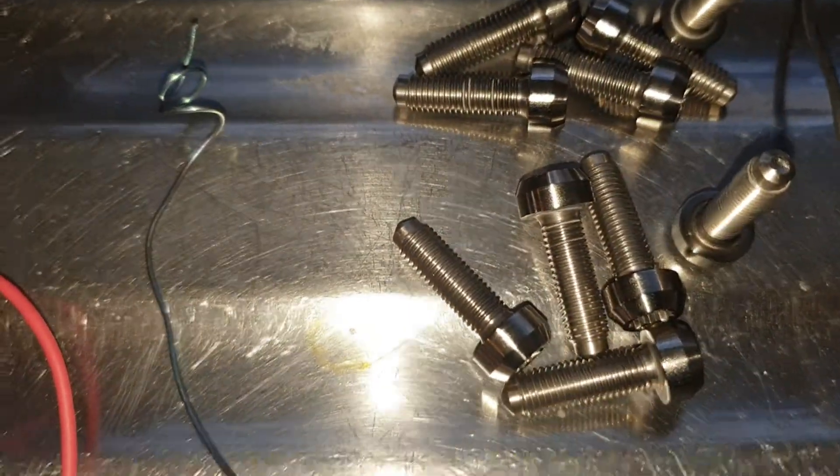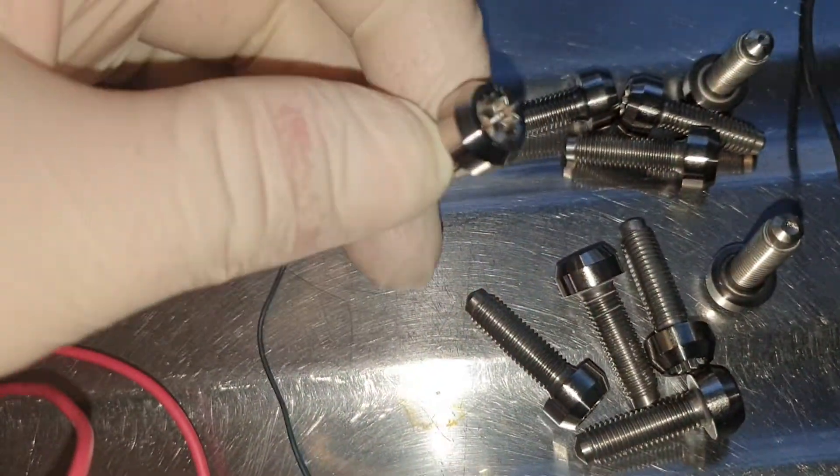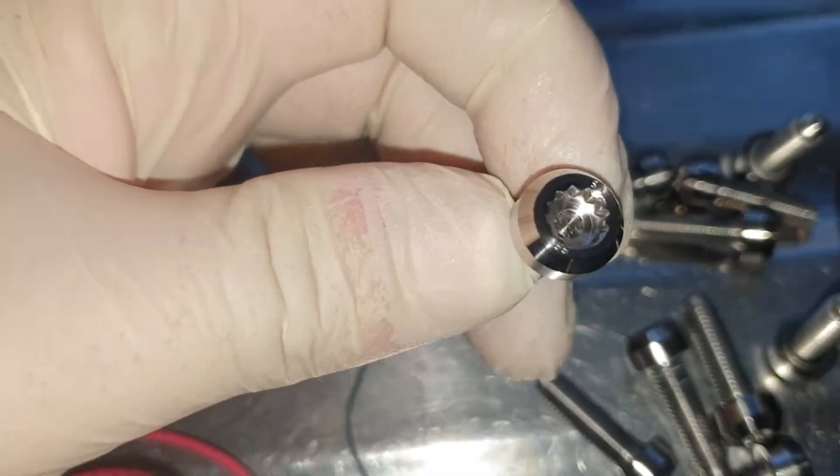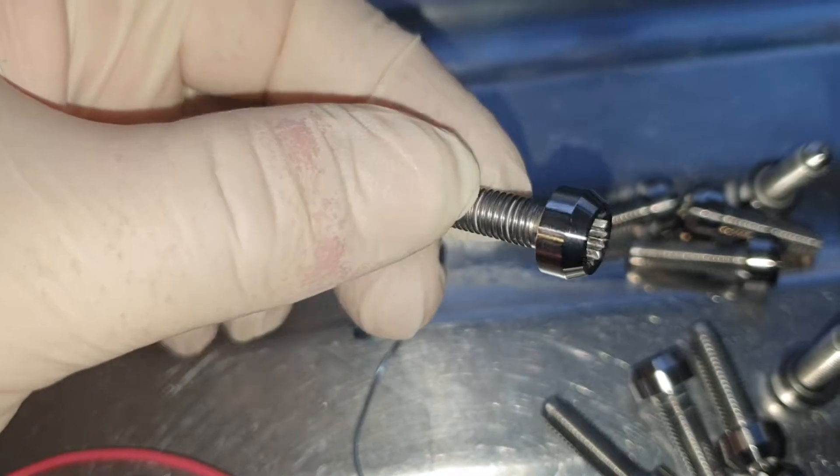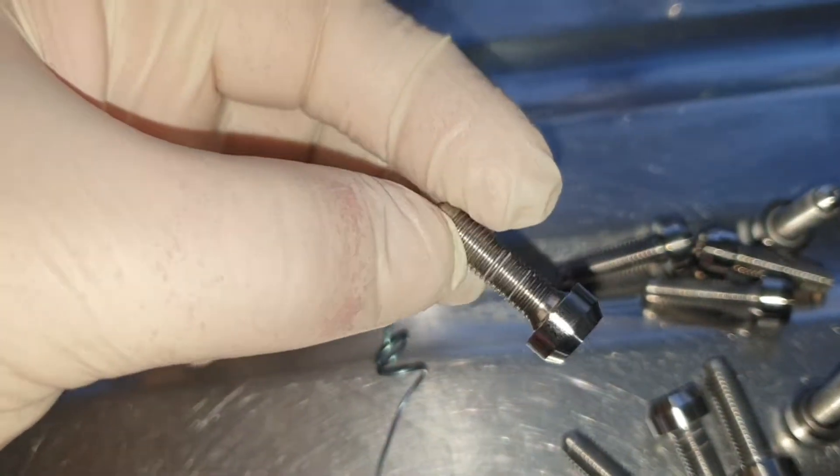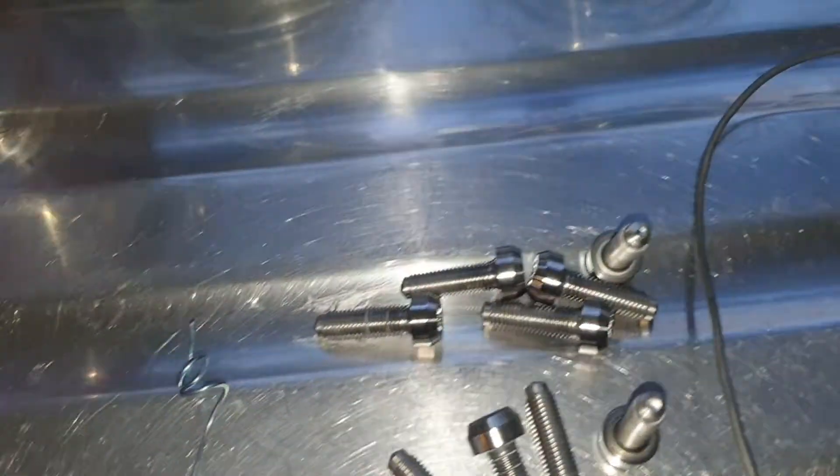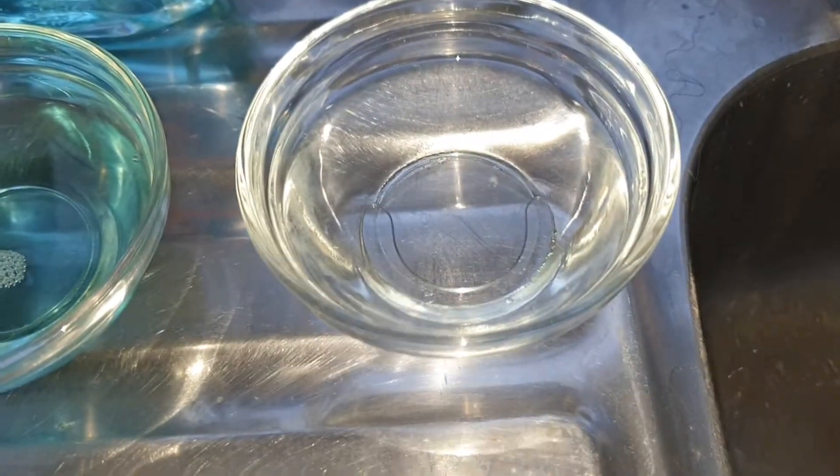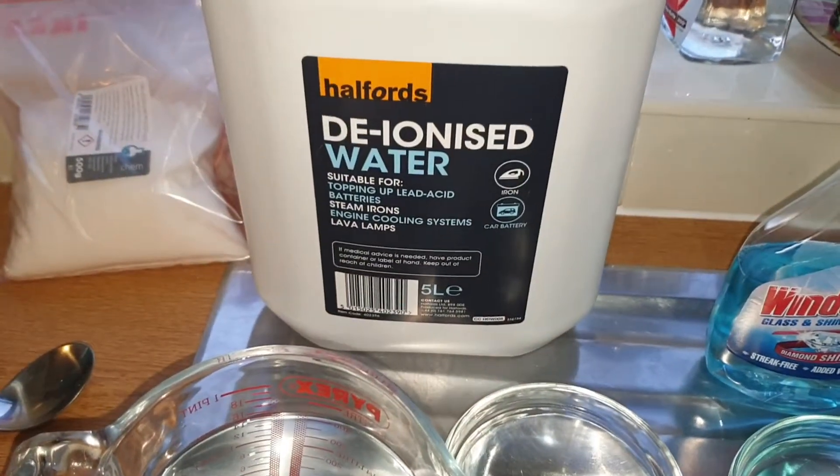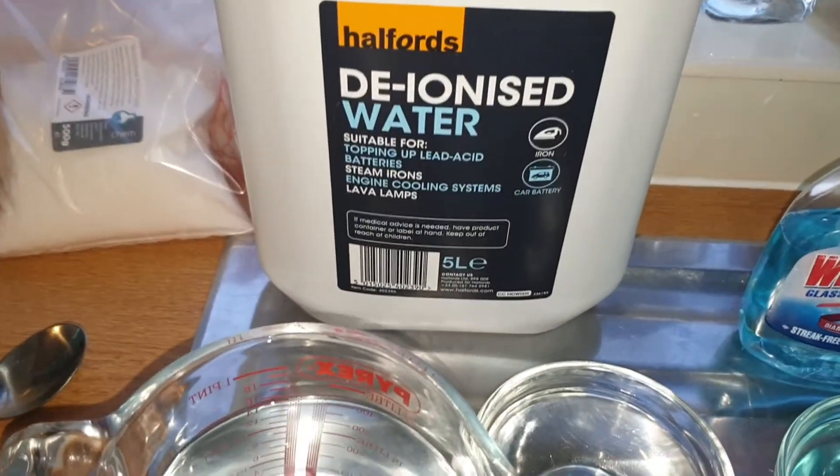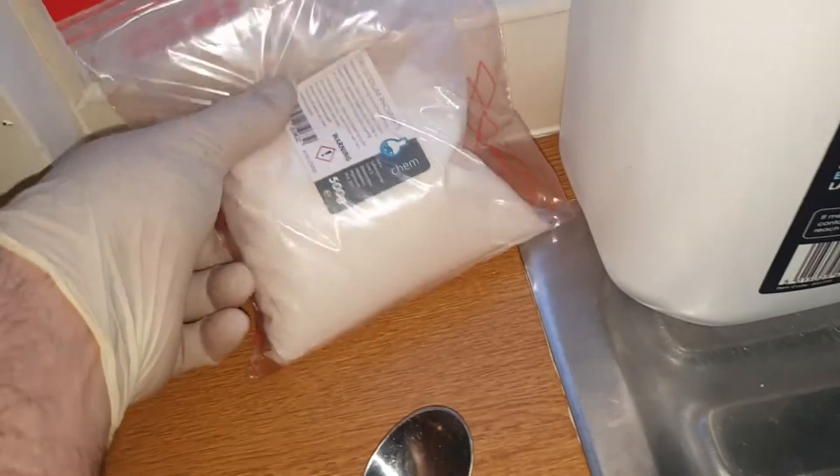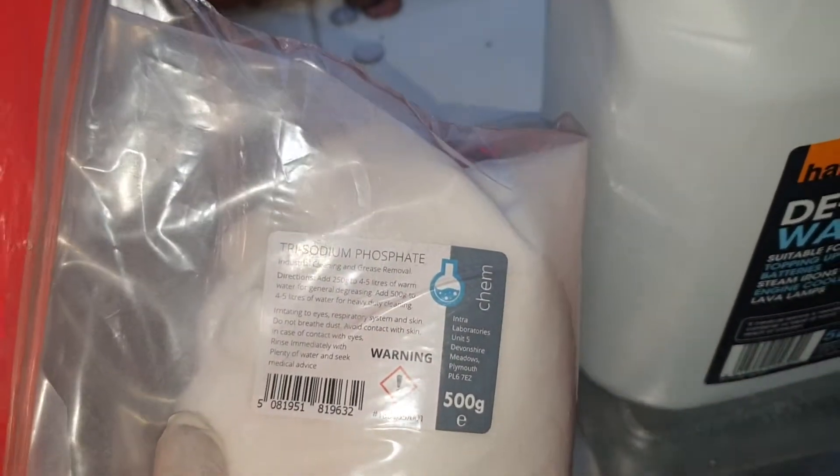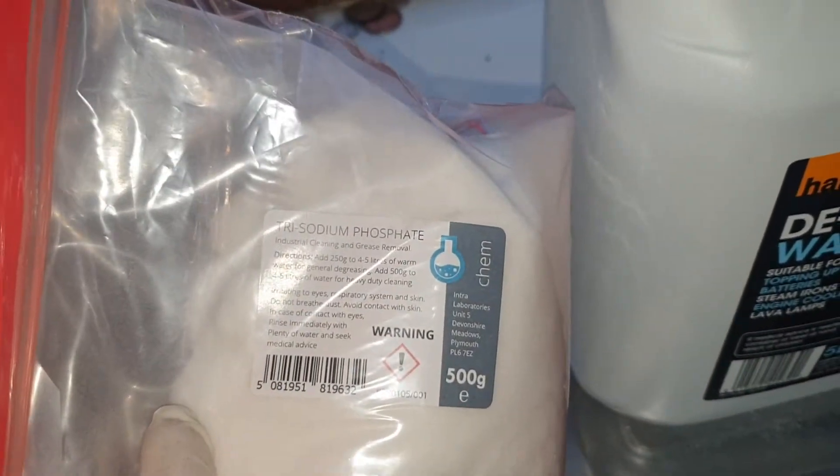We have polished titanium bolts. Scotch pad, a little metal polish, quick over with a wire wheel. Acetone to clean them. Deionized water has to be deionized, not tap water. Trisodium phosphate.